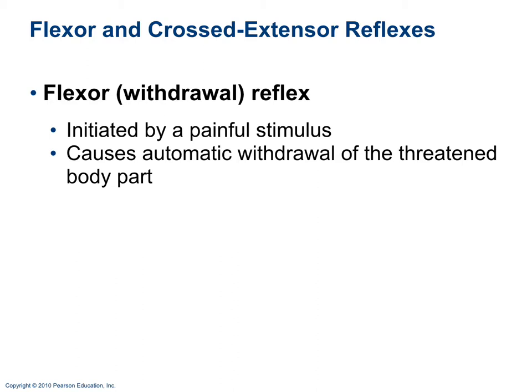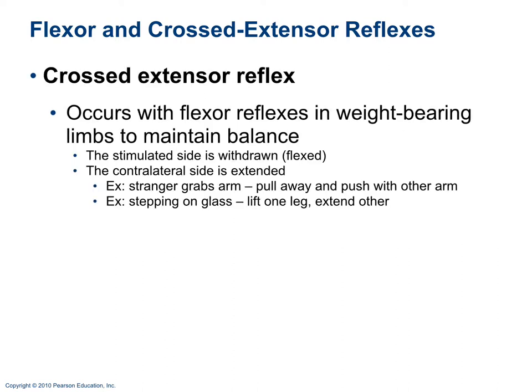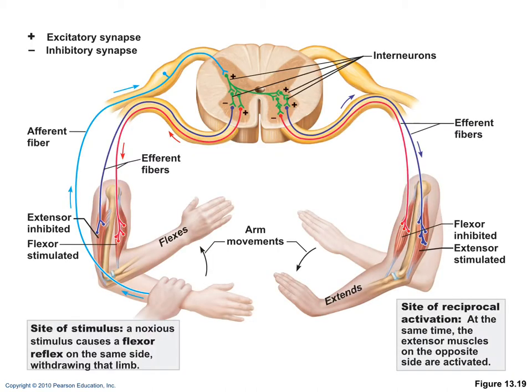The flexor reflex, also called the withdrawal reflex, is initiated by a pain stimulus and causes automatic withdrawal from that pain. The crossed extensor reflex involves the stimulated side withdrawing or flexing while the contralateral side extends. For example, if someone grabs your arm, you pull that arm away and push with the other; or if you step on glass with your right foot, you lift your right leg and extend your left leg.